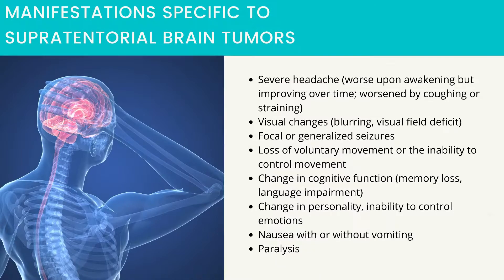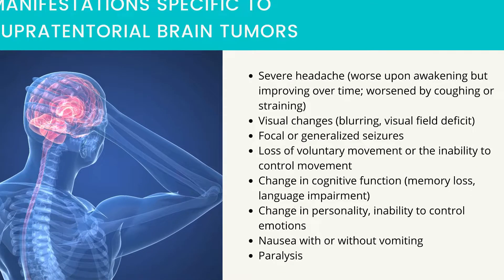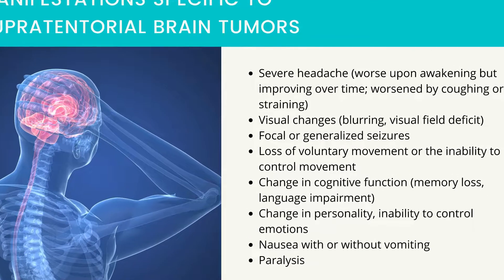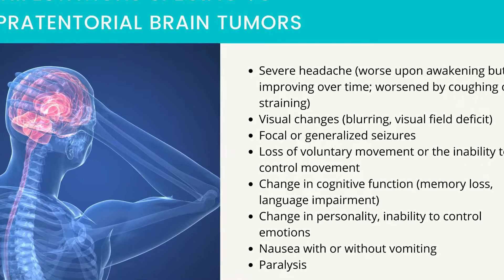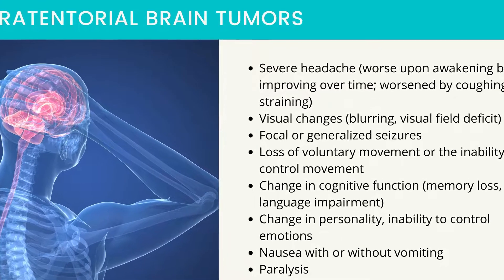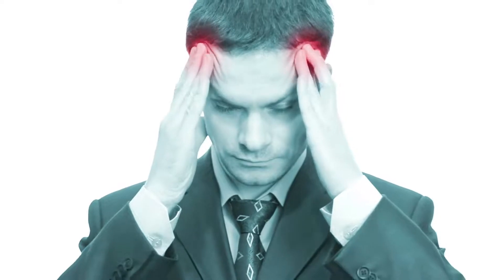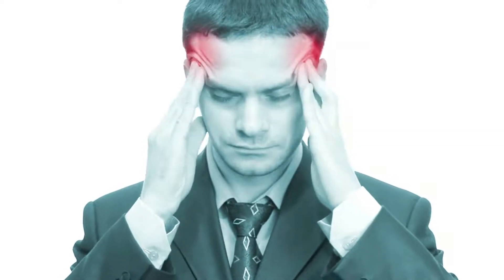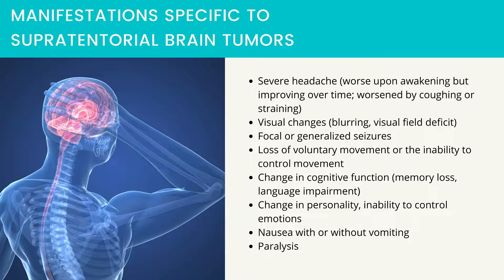Manifestations specific to supratentorial brain tumors include severe headache — worse upon awakening but improving over time and worsened by coughing or straining — visual changes such as blurring and visual field deficit, focal or generalized seizures, loss of voluntary movement, change in cognitive function, memory loss, language impairment, change in personality, inability to control emotions, nausea with or without vomiting, and paralysis.